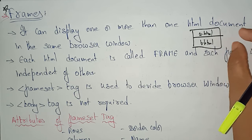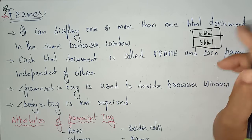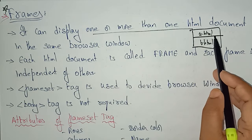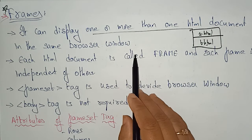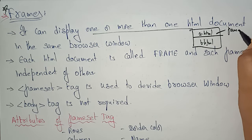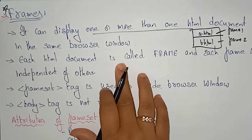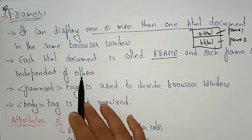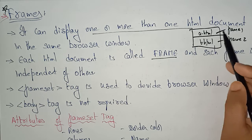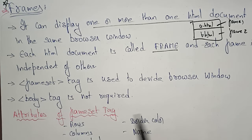You can call both files in the same web browser — that is the use of frames. Each HTML document is called a frame. So this is frame one and this is frame two. Each frame is independent of the other — there is no dependency relationship. This is a separate file and that is a separate file.